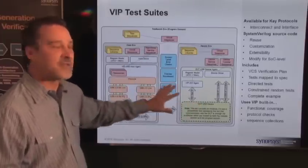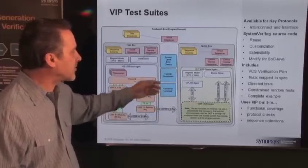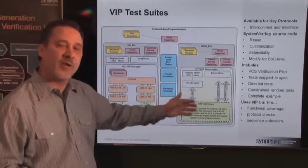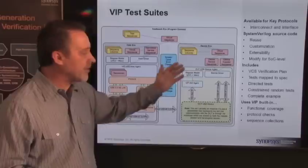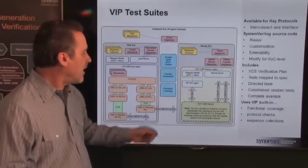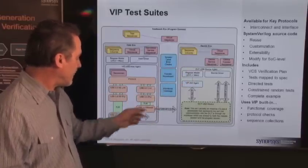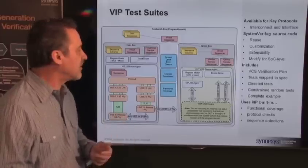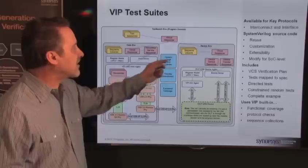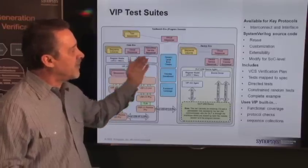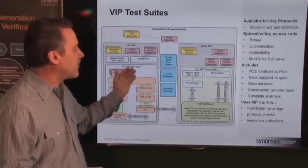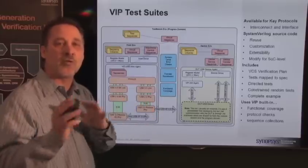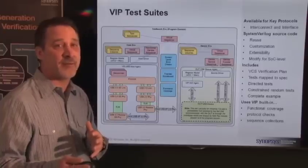Also included in this overall environment is naturally scoreboarding — that's the thing that validates whether the USB transfer went into your device correctly and we read the correct thing out the AXI side. You'd also have functional coverage implemented in the VIP that allows you to see how much stimulus you've actually done, along with system-level checks. Between the USB side and the AXI side, you have virtual sequencers controlling and coordinating the activity between the two sides.